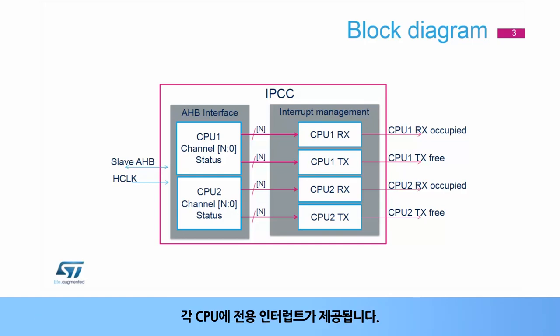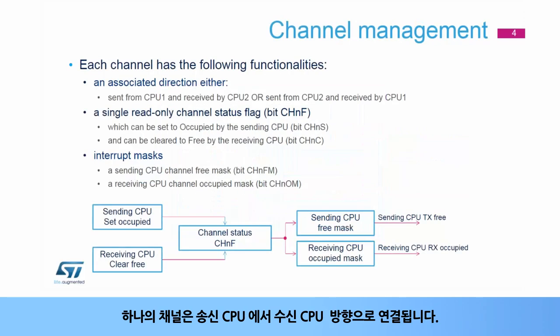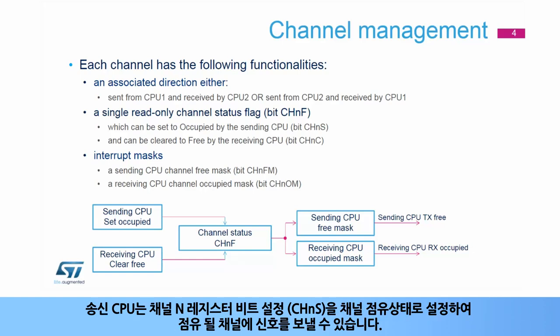Dedicated interrupts are provided for each CPU. A channel is associated with the direction from a sending CPU to a receiving CPU. The sending CPU can signal a channel to be occupied by setting the channel status to occupied using its set channel N register bit, or CHNS.